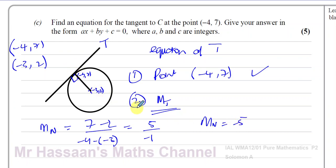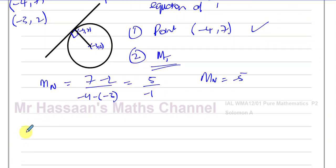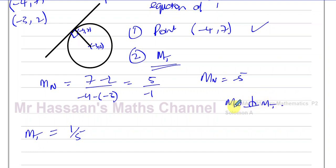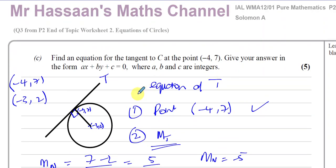Therefore the gradient of the tangent is 1/5, the negative reciprocal, because the normal and tangent are perpendicular to each other. The question asks us to find the equation in the form Ax plus By plus C equals 0, where A, B, and C are integers. Using y minus y1 equals m times x minus x1, we get y minus 7 equals 1/5 times x plus 4.